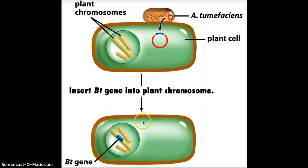Here we have that BT gene inside a normal plant chromosome — it's been inserted into the chromosome. When that cell goes to express the genes on that chromosome, it's just going to automatically do the transcription and translation of that BT gene, and it's going to make that toxin that is then going to kill insects.